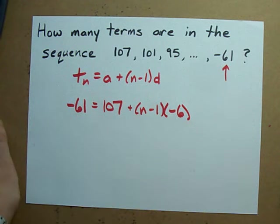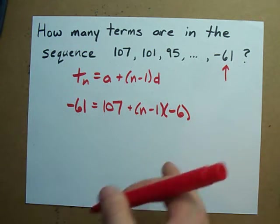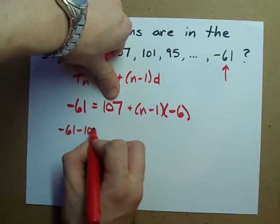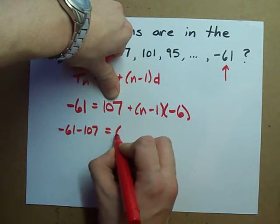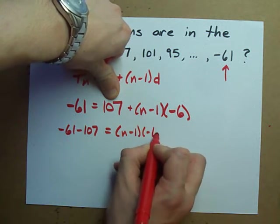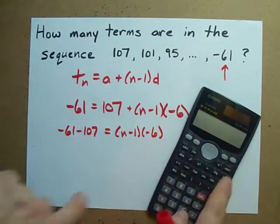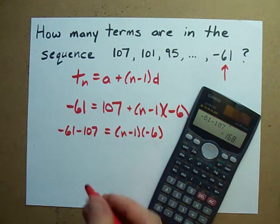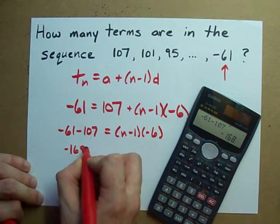So, how do we solve for n? Algebraically, there's lots of ways to do it. I'm going to do it my way. The first thing is move the 107 over. We have to subtract it from that side. When I do that, negative 61 minus 107, I get negative 168.